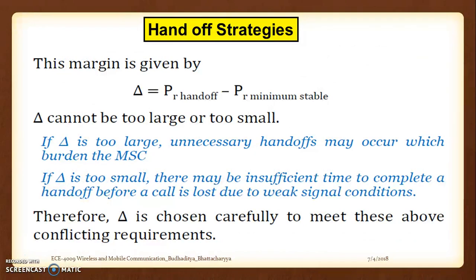The main criteria behind handoff strategies is given by the equation: delta equals PR_handoff minus PR_minimum_usable. This delta is a margin providing a judicious decision-making parameter. Delta should not be too large or too small. If delta is too large, it means there will be too many unnecessary handoffs, because the minimum usable threshold is kept so low that even when call quality is good, the difference makes the system unstable and triggers a handoff.